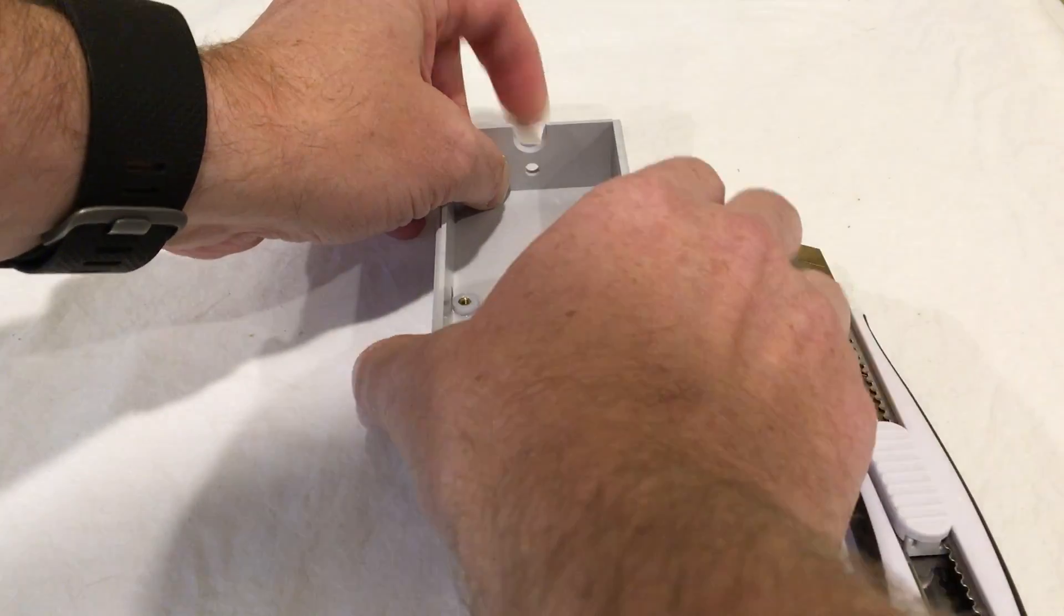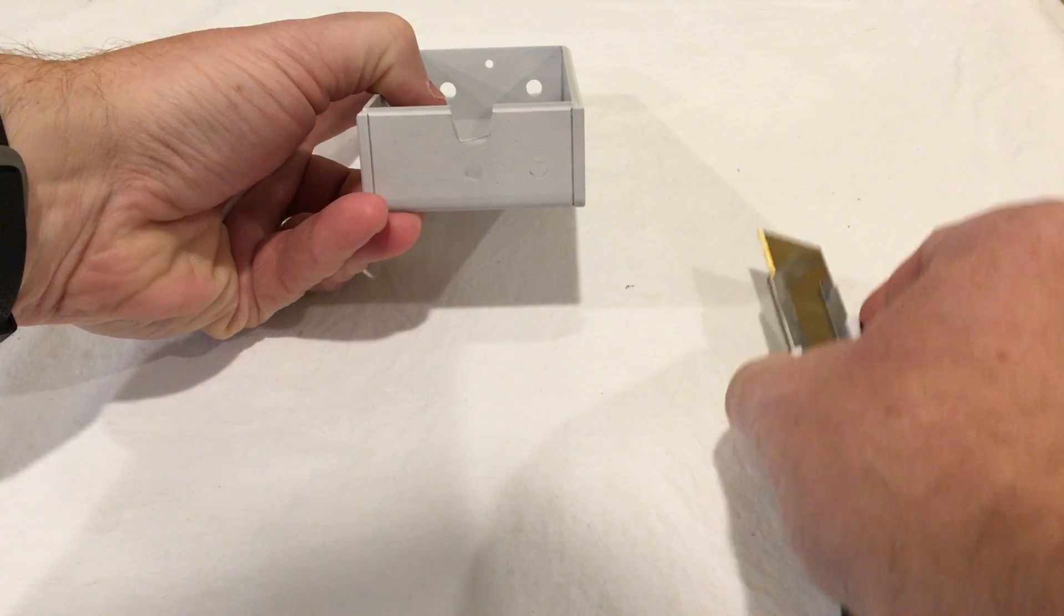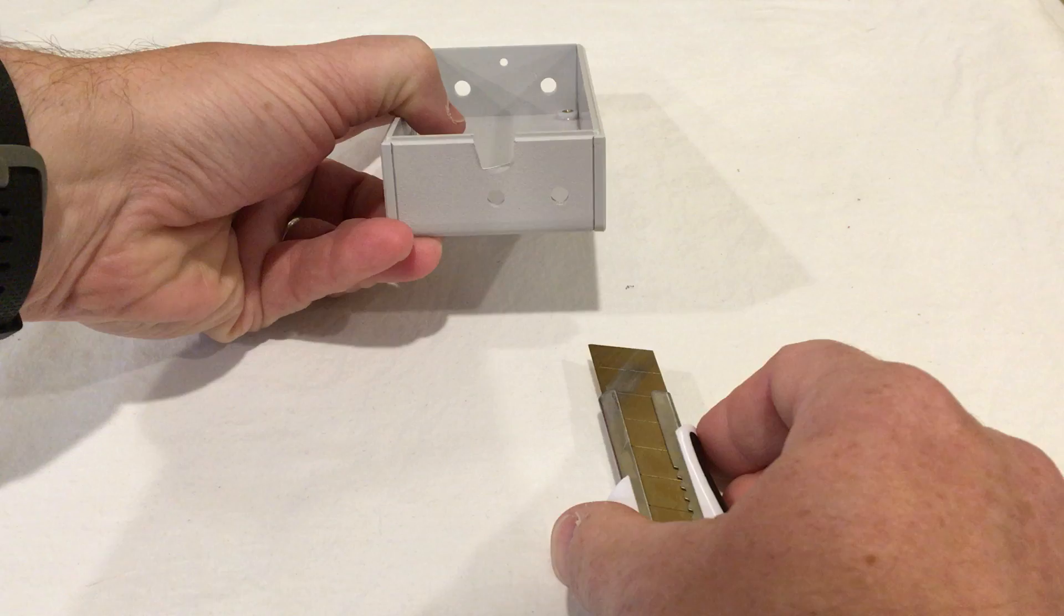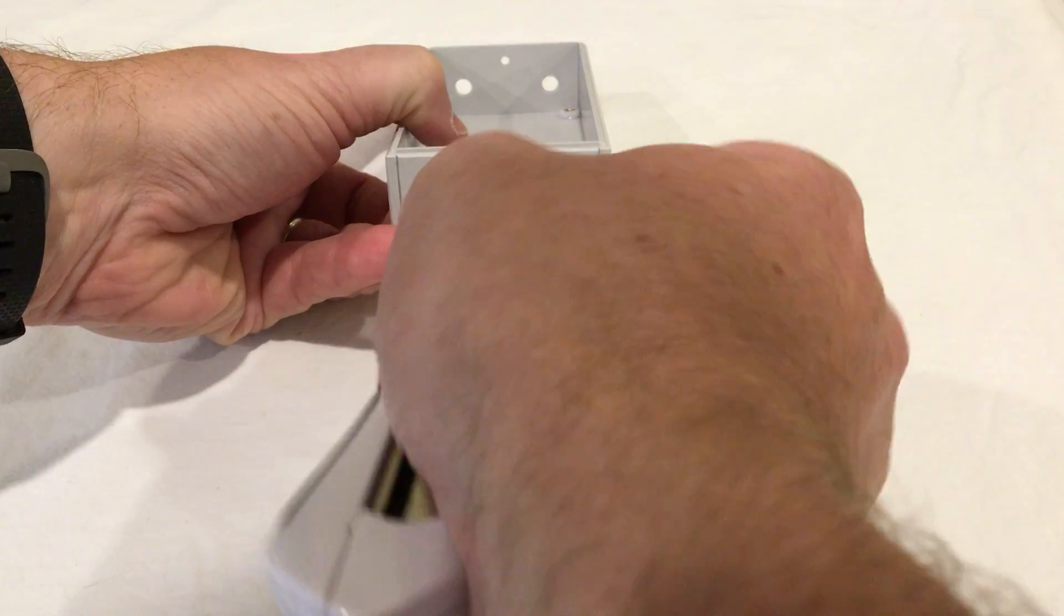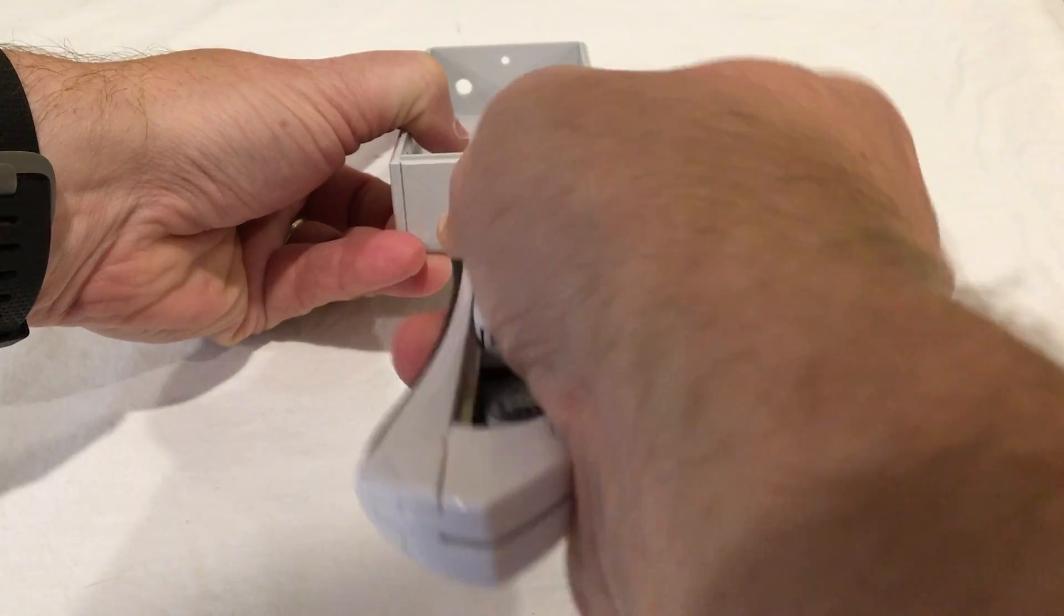Once that's removed, you have it cut out. It'll be a little bit rough there. You can see the shape of it. Feel free to take a piece of sandpaper or something, or a smaller knife, and carefully trim that out so that it has a slightly more pleasant look to it.